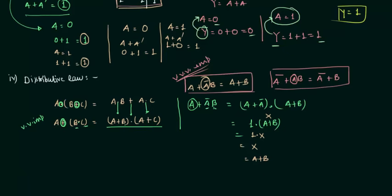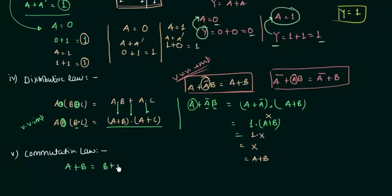Now we move to the fifth rule: the commutative law. Boolean algebra follows the commutative law. If we have a OR b, it can be written as b OR a — there is no difference. Similarly, a AND b equals b AND a.